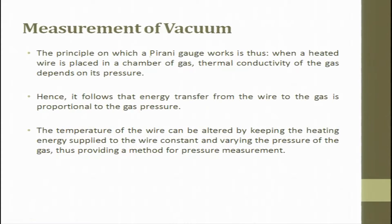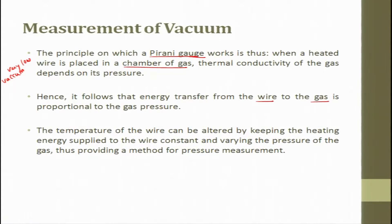The other gauge is called the Pirani gauge. The principle on which a Pirani gauge works is: when a heated wire is placed in a chamber of gas, the thermal conductivity of the gas depends on its pressure. Hence, energy transfer from the wire to the gas is proportional to the gas pressure. The temperature of the wire can be altered by keeping the heating energy supplied to the wire constant and varying the pressure of the gas, thus providing a method of pressure measurement.